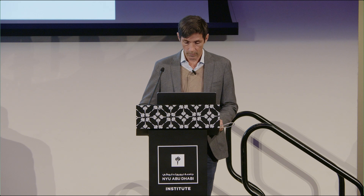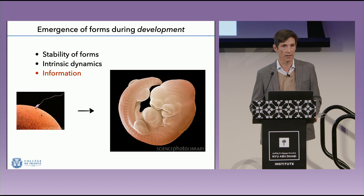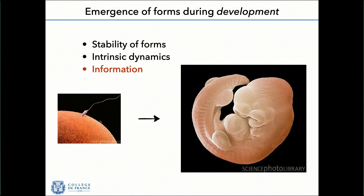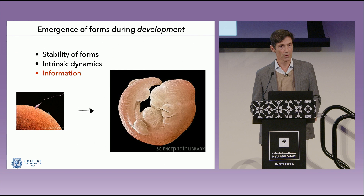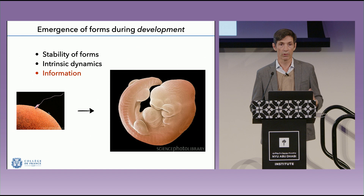Zooming in on the process of development, you could start with an oocyte about to be fertilized by a sperm, and on the right a human embryo many days later that already has its characteristic organized structure along the main body axes and the formation of the limbs. This leads me to introduce a guiding theme: given the stability of forms and the intrinsic dynamics of the internal constituents, there has to be some form of information that guarantees that structures arise reproducibly.